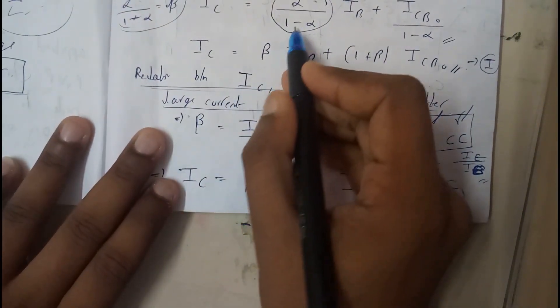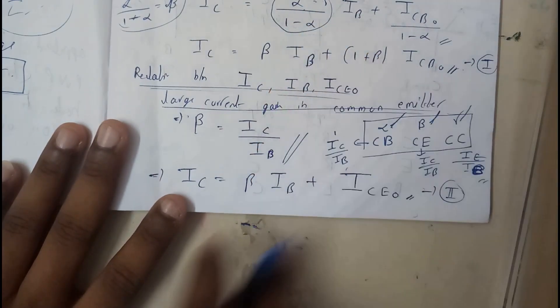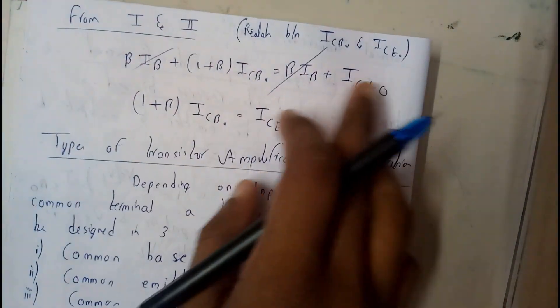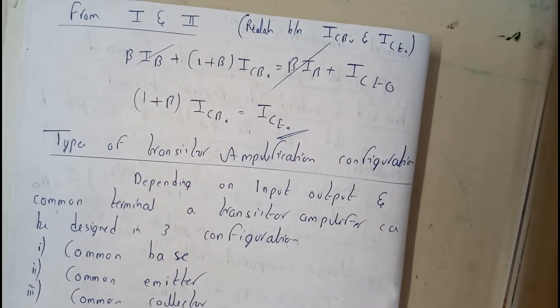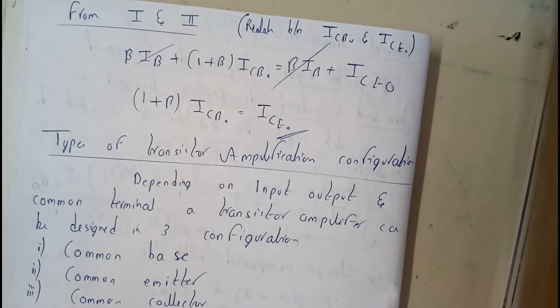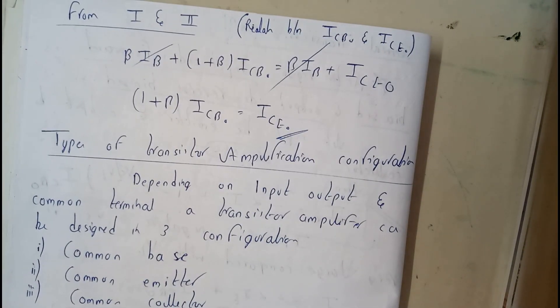Basically let us assume that beta is nothing but alpha by 1 minus alpha, so it's right here. Further moving on from equations 1 and 2, by comparing we can just get this equation. I hope everyone can do that. So in the next tutorial we'll be going through some configurations of transistors. Thank you, thanks for watching.